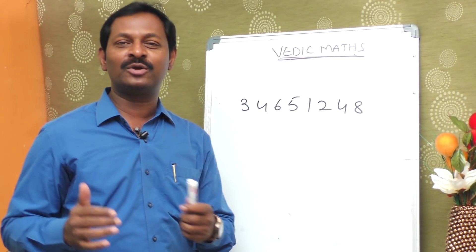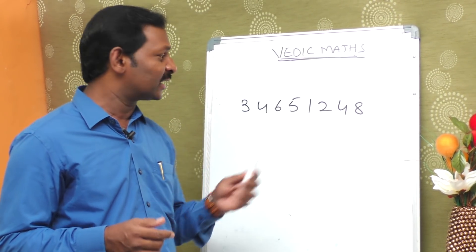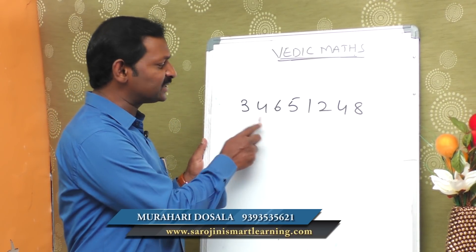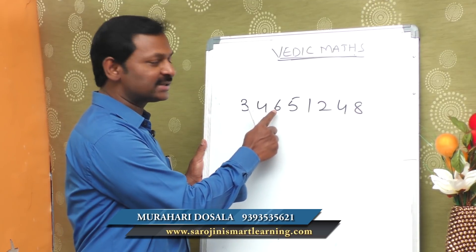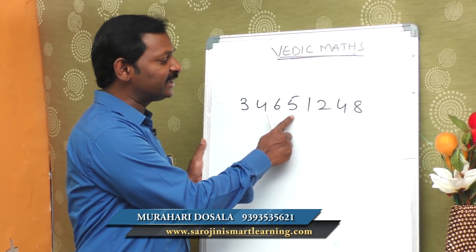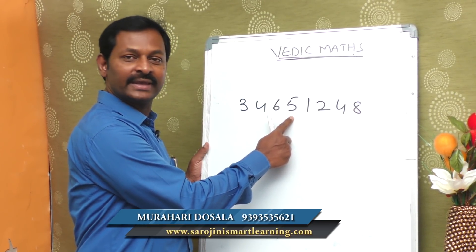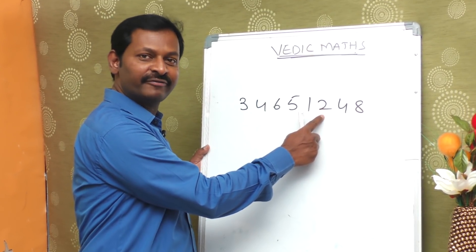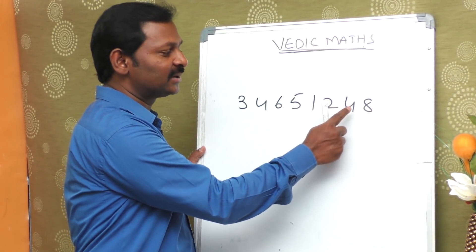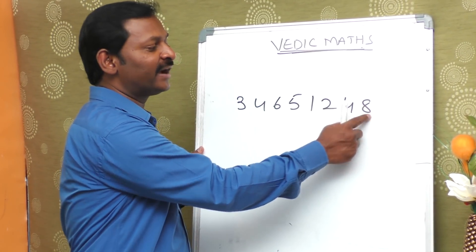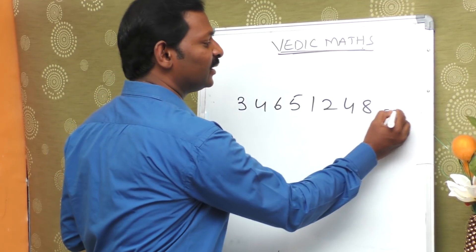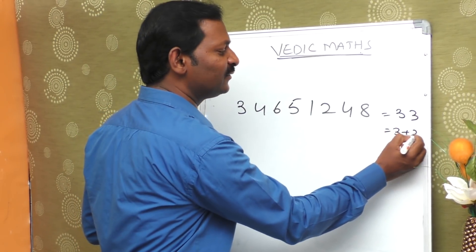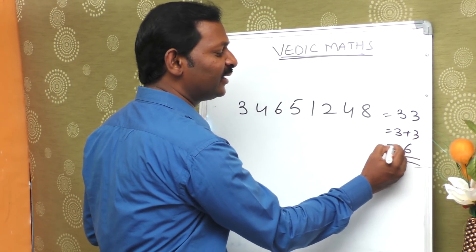If you do 3 numbers or 10 numbers, we will do addition. The question is: 3 plus 4 is 7, 7 plus 6 is 13, 13 plus 5 is 18, 18 plus 1 is 19, 19 plus 2 is 21, 21 plus 4 is 25, 25 plus 8 is 33. That's the answer — we will have 2 digits: 3 and 3. 3 plus 3 equals 6. So the final answer is 6.